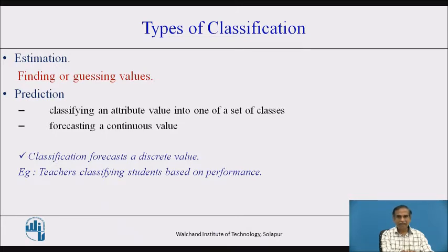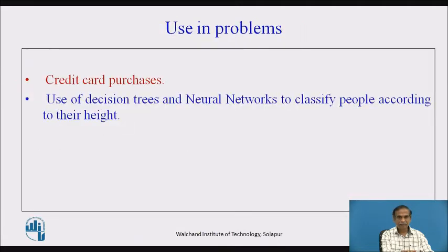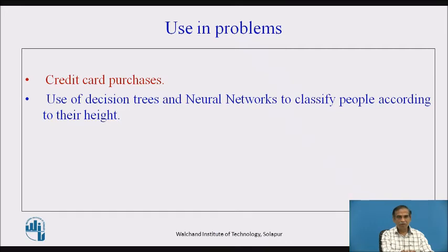Classification requires some data to be defined. It is used in problems like credit card purchase, where a requirer looks into what facilities the service provider offers and prefers to purchase a specific card — a MasterCard, Visa card, or another card of interest. Decision trees and neural networks help classify people according to their attributes to solve particular problems.